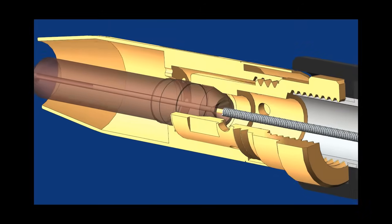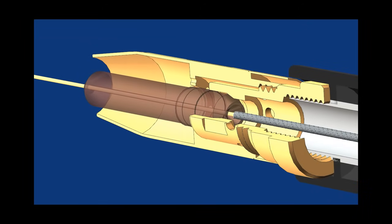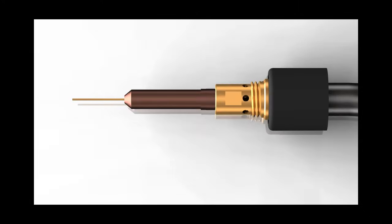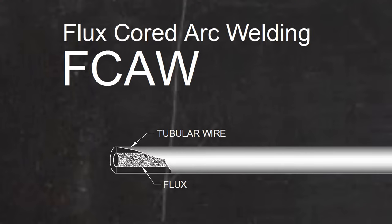All flux core welding is done on equipment that is similar to and sometimes identical to the equipment used in MIG or gas metal arc welding. If you're not familiar with MIG welding, you might want to watch our What is MIG Welding video before continuing, but you should understand that flux core welding has some important differences from MIG welding.